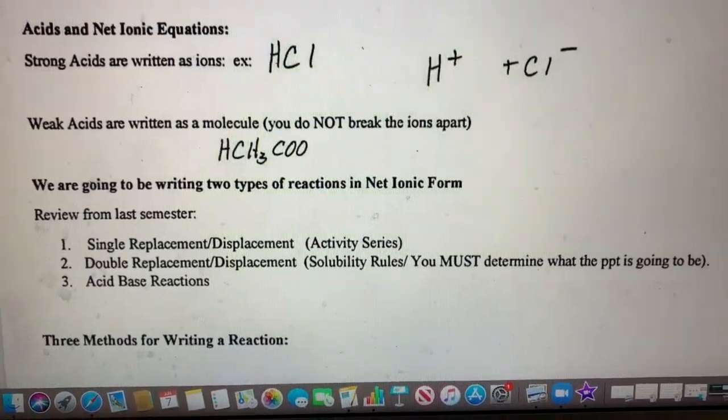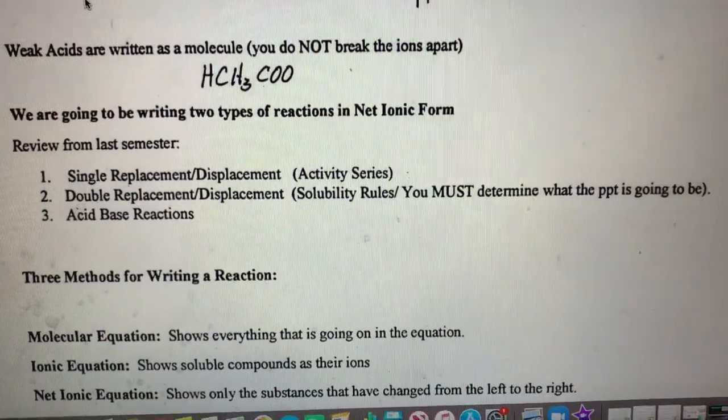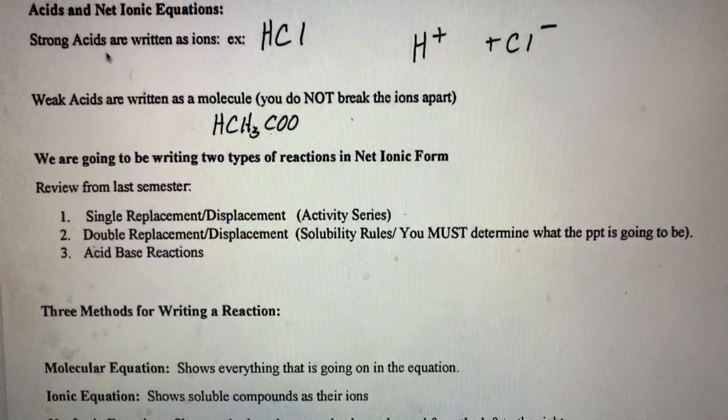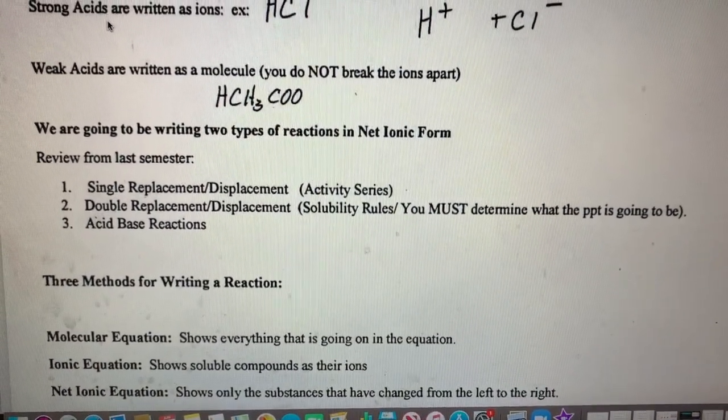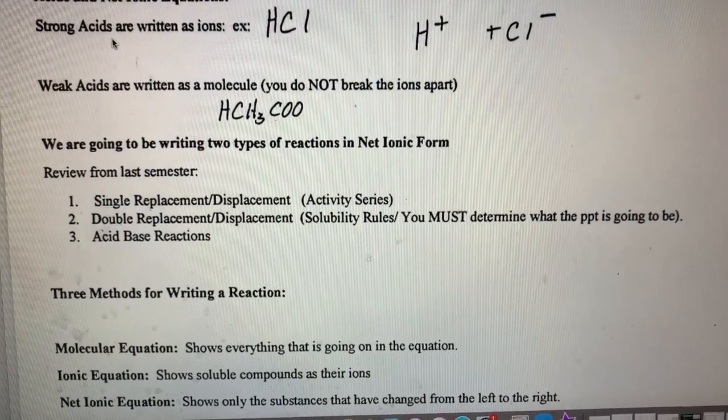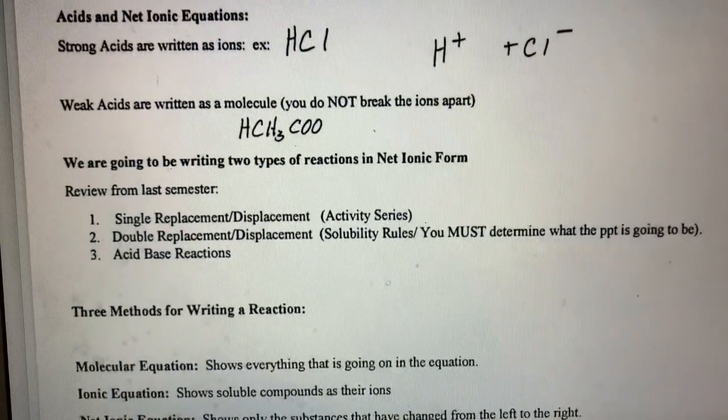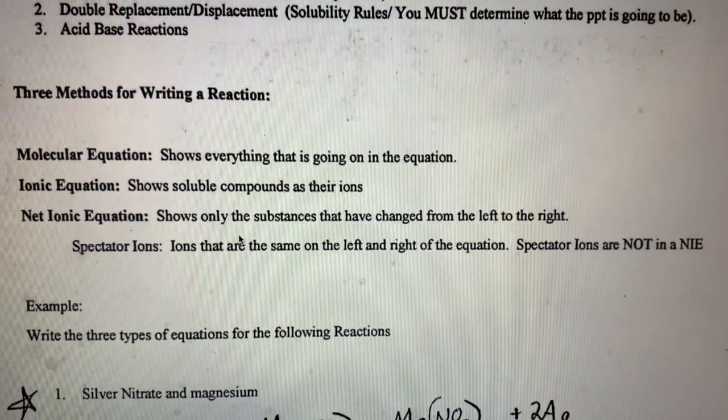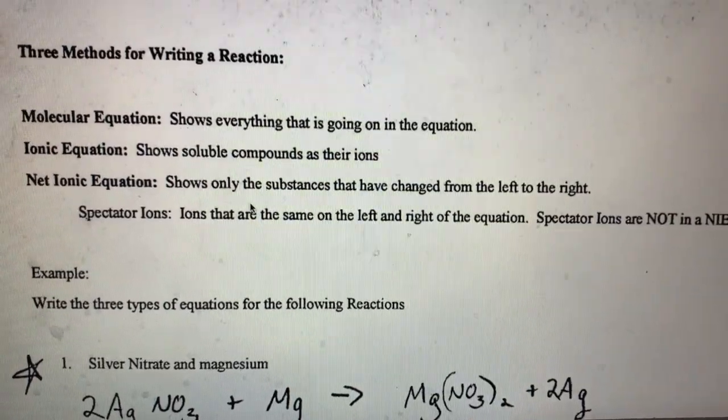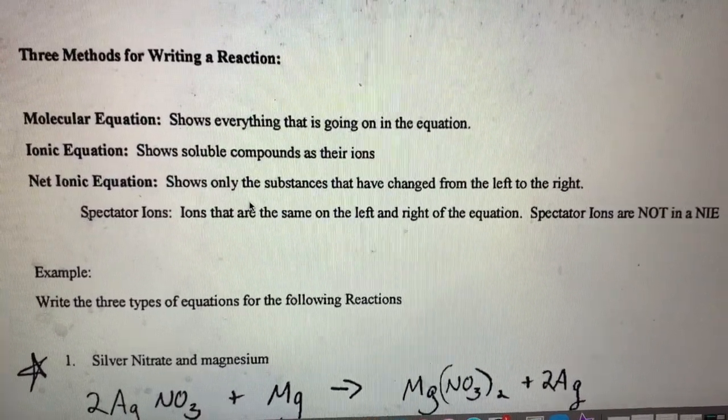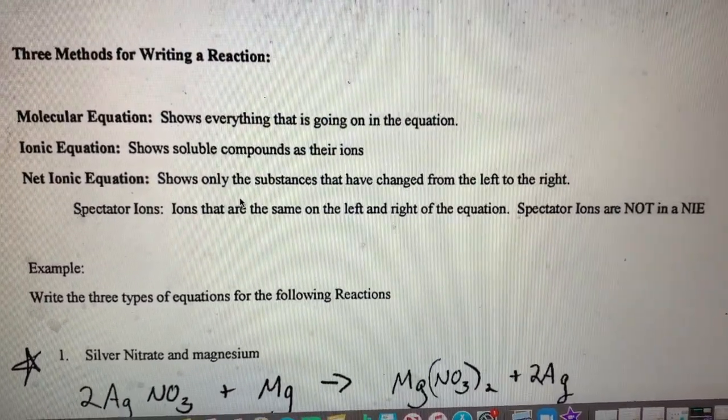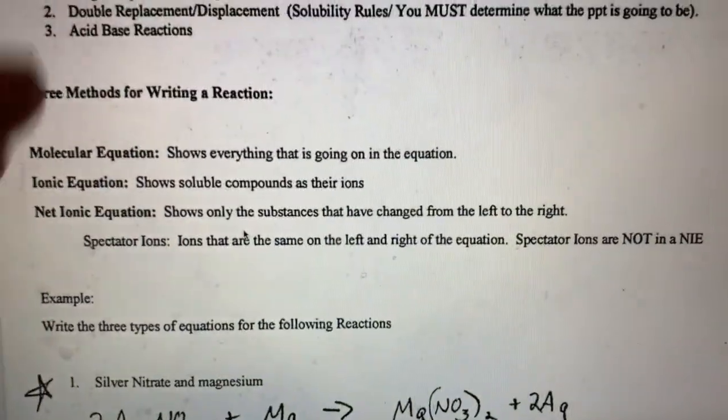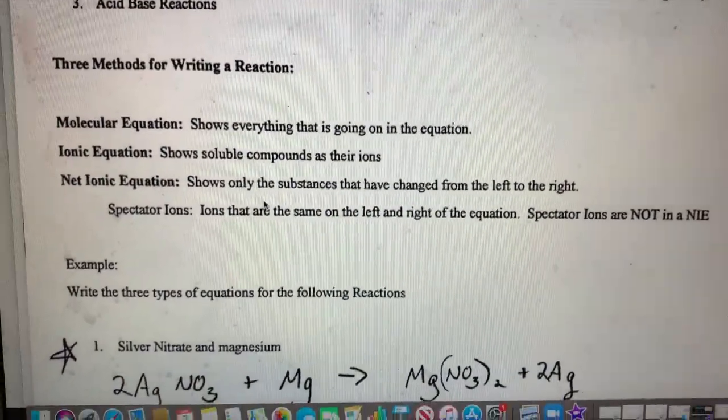Where do we usually use these net ionic equations? We've seen single displacement reactions, which are going to be important because that's your lab grade for this week, double displacement reactions which we did a ton of last semester, and a little bit of acid-base reactions. There are three types of equations technically: molecular equations which we've been dealing with all year, ionic equations which show soluble compounds as ions, and net ionic equations which take out any spectator ions. A spectator ion is one that doesn't change from the left to the right.